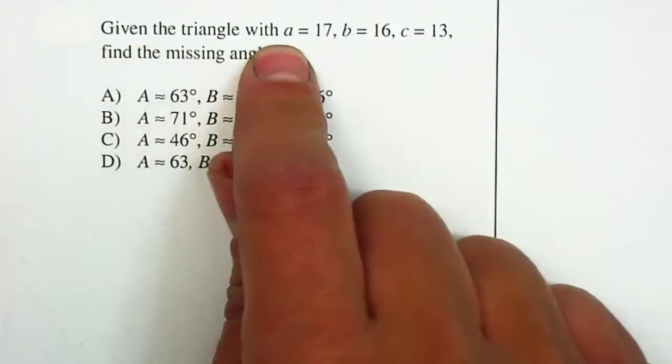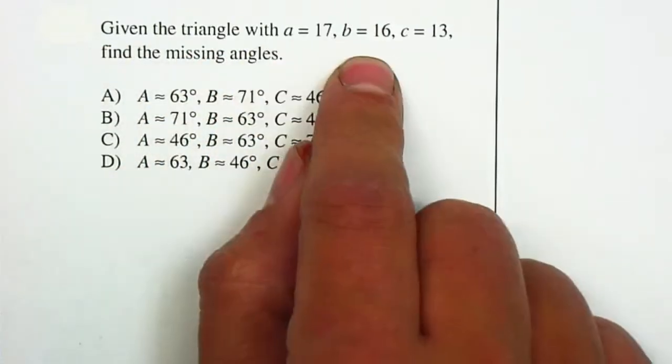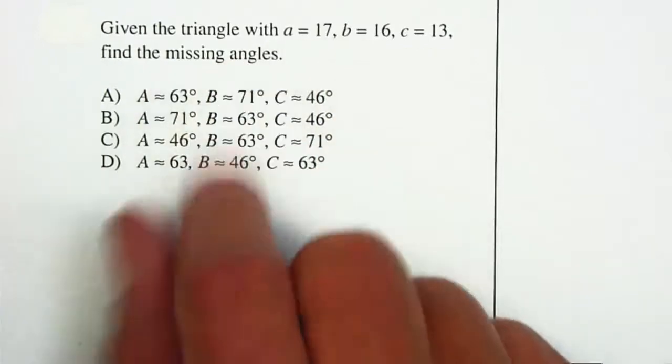Given the triangle with a = 17, b = 16, c = 13, find the missing angles.